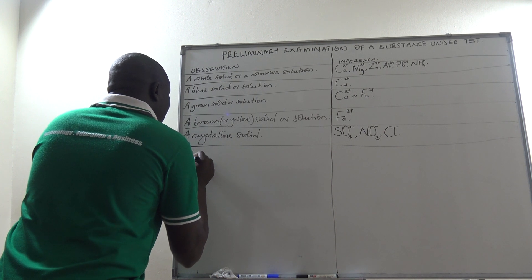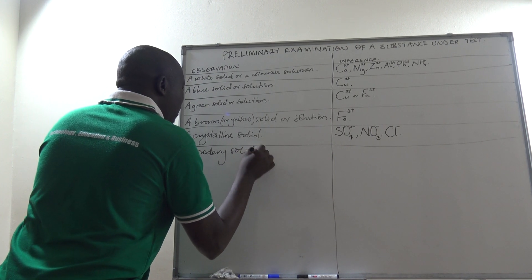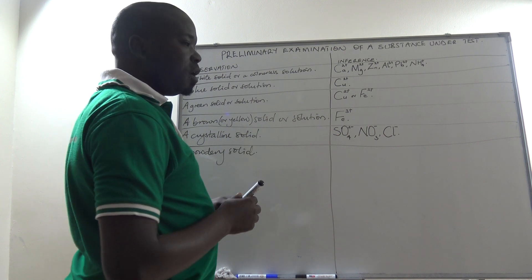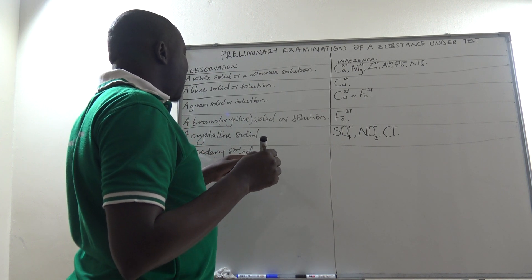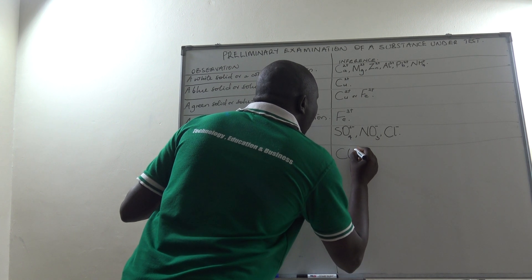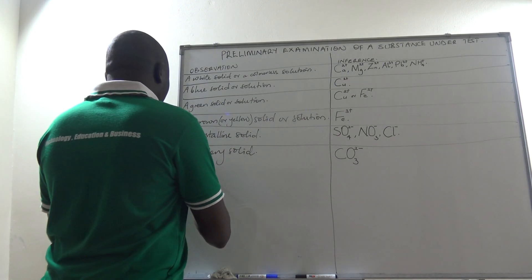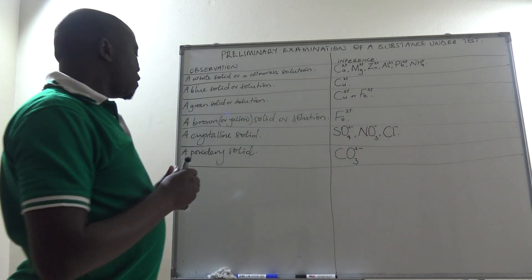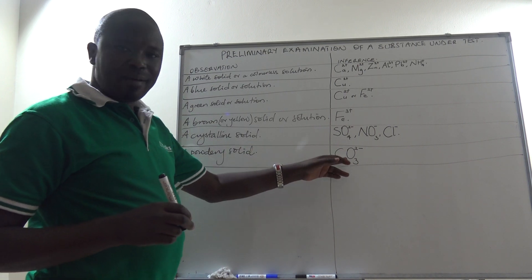If the substance is a powdery solid — remember we are looking at salts — if you have been given a salt which is powdery, then it is likely to be a carbonate, and not ammonium carbonate which is in crystal form. The carbonates provided are generally always powdery. If you have a powdery solid, just know that it is likely to be a carbonate.